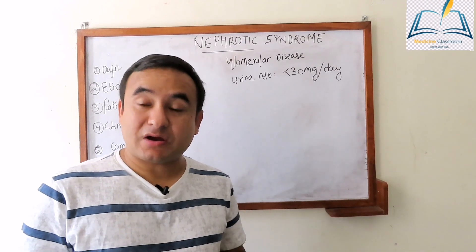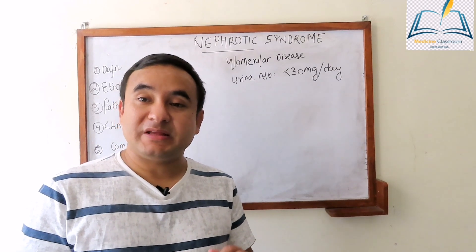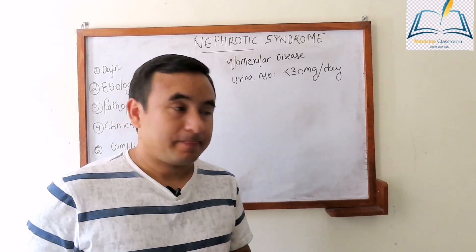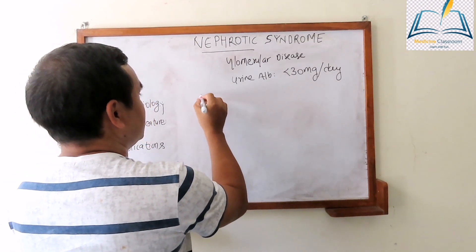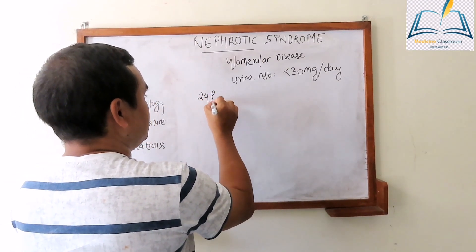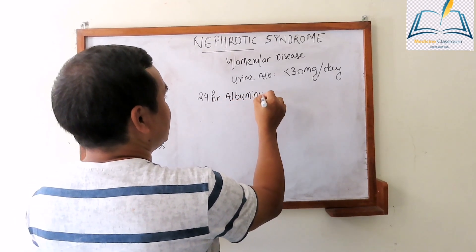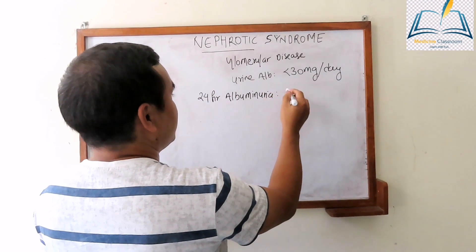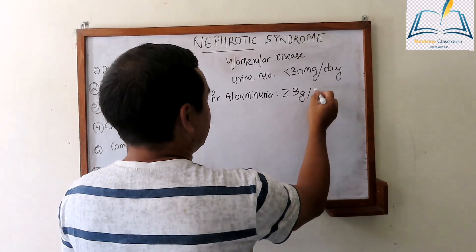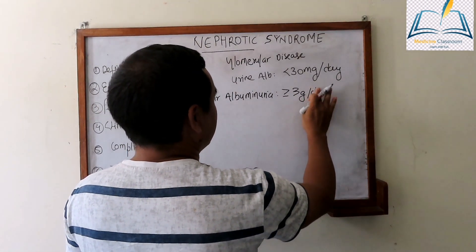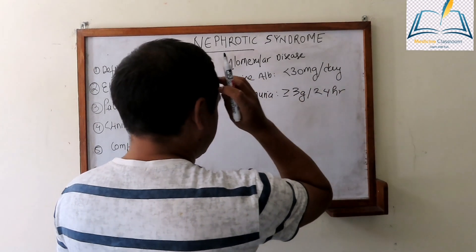Only a small amount of albumin is passed in the urine. But nephrotic syndrome is the condition where we see a large amount of albumin in the urine. To diagnose nephrotic syndrome, there must be more than 3 grams of albumin in a 24-hour sample.